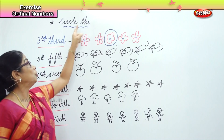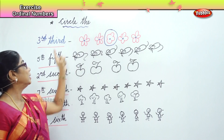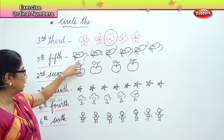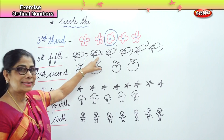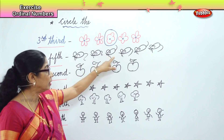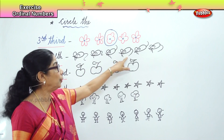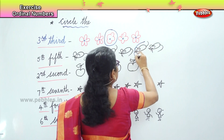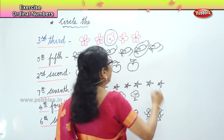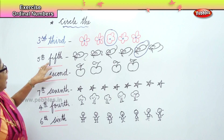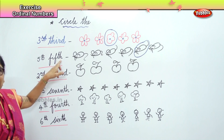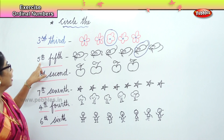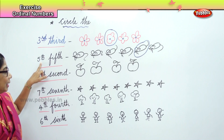Now, fifth — you're going to circle the fifth mouse. Let's count: first, second, third, fourth and fifth. This is the fifth mouse and we're going to circle the fifth mouse. Fifth spelling: F-I-F-T-H. The short form of fifth is five and T-H.